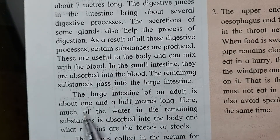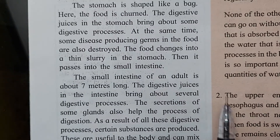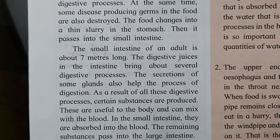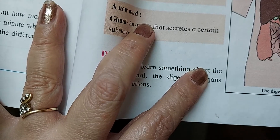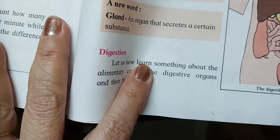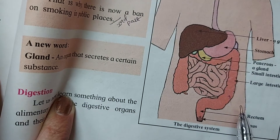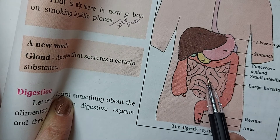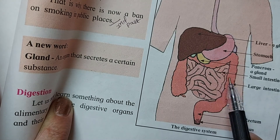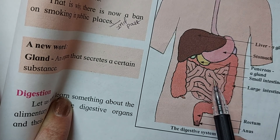One important point: the large intestine of an adult is 1.5 meters long, while the small intestine is 7 meters long. So actually, the small intestine is not small — it is big, but it is thin. That is why it is called the small intestine. You can see in the diagram — the large intestine is wider, and the small intestine, though 7 meters long, is thinner. That is why one is called large and the other is called small.